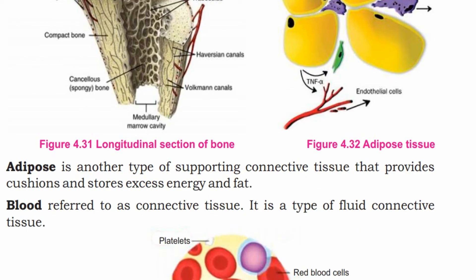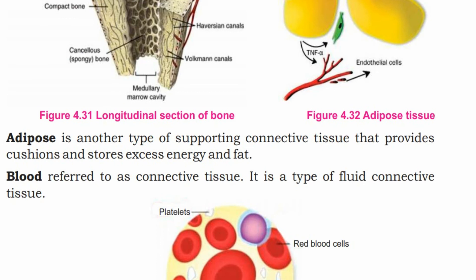Adipose is another type of supporting connective tissue that provides a cushion and stores excess energy and fat.